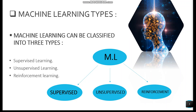Machine learning is classified into three major types. The first type is supervised learning. The second type is unsupervised learning. And the third most important type is reinforcement learning.